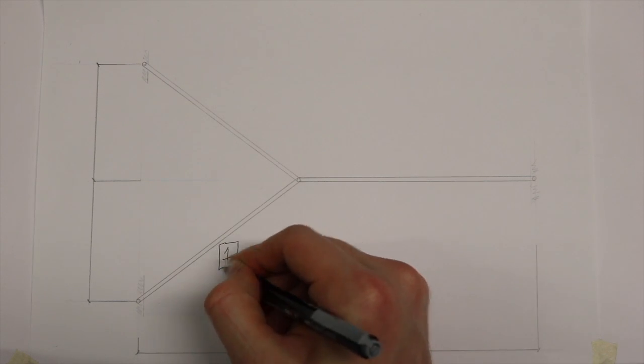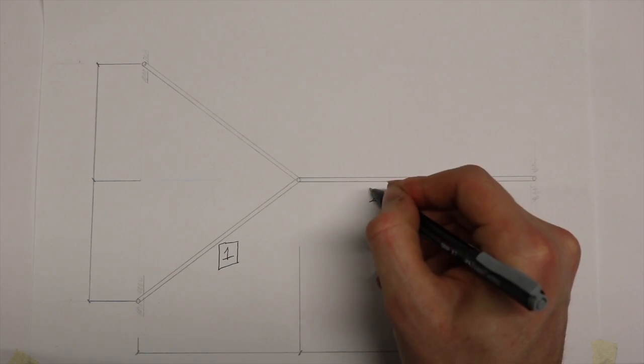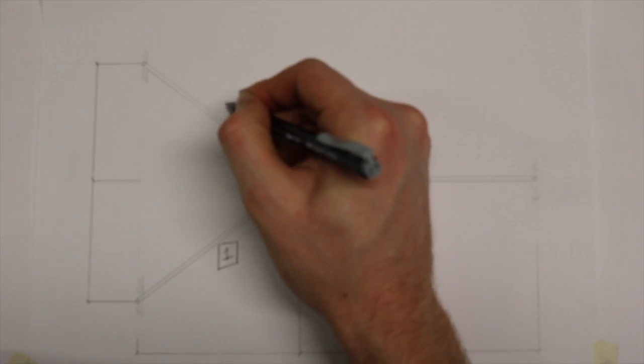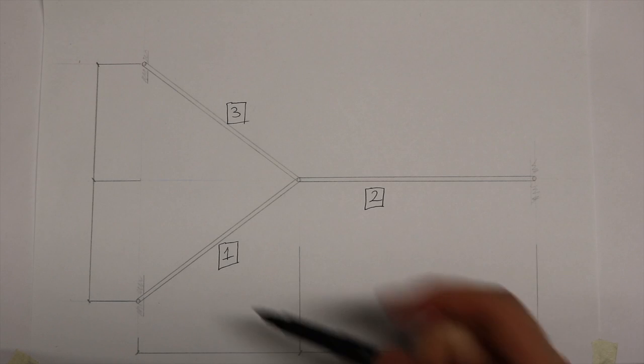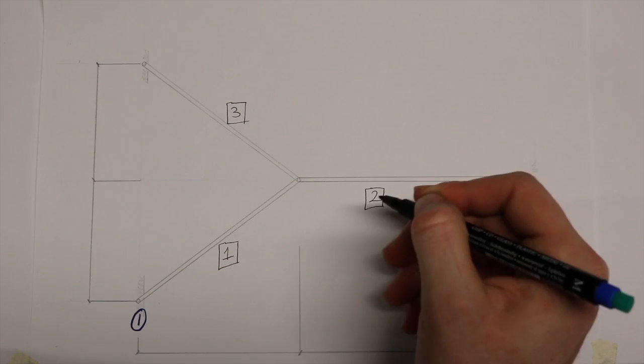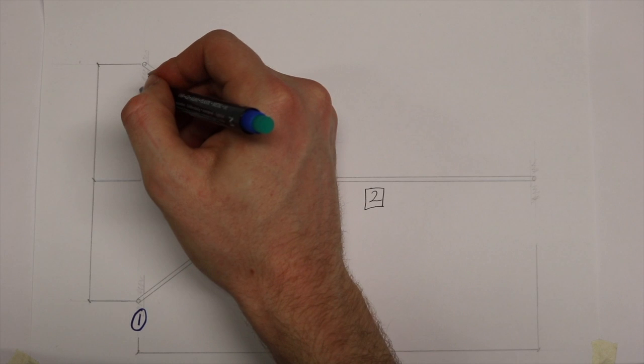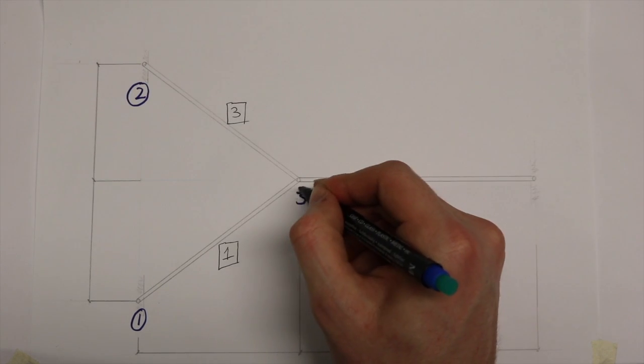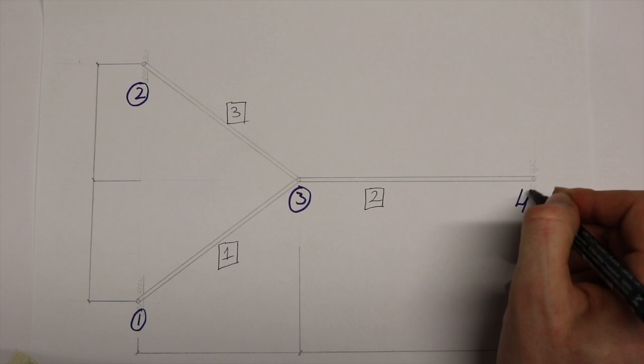Firstly, we must begin by numbering each member of the truss 1, 2, and 3 in black with a box to avoid confusion. Now to label each node 1, 2, 3, and 4 in blue, with nodes 1, 2, and 4 all constrained from displacement because of their connection at supports.